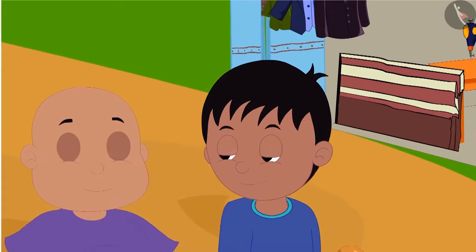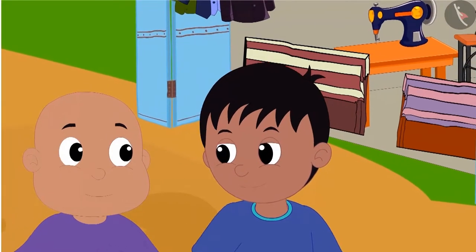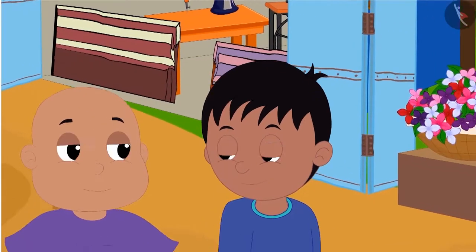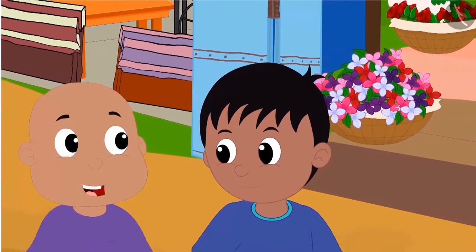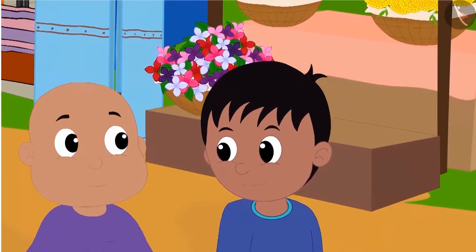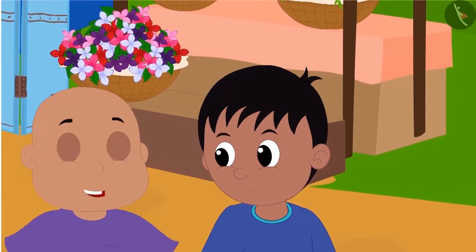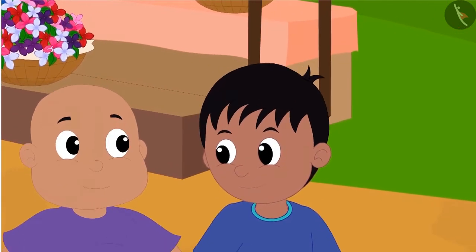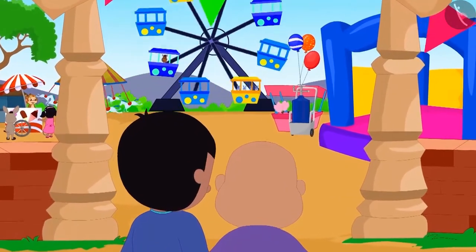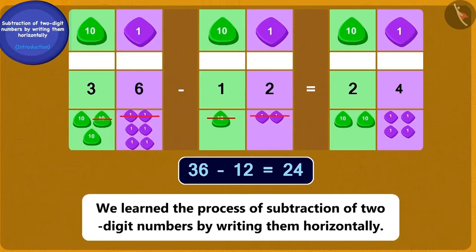Bablu also explained the process of subtraction to Raju in exactly the same way. Raju became very happy and said: 'Bablu, I have understood now — I will be able to solve subtraction sums easily!' Bablu replied: 'If that's the case, let us go to the fair, and this time why don't you solve some subtraction puzzles for me?' Let us see what they do in the next chapter. Children, in this lesson we learned the process of subtraction of two-digit numbers by writing them horizontally.